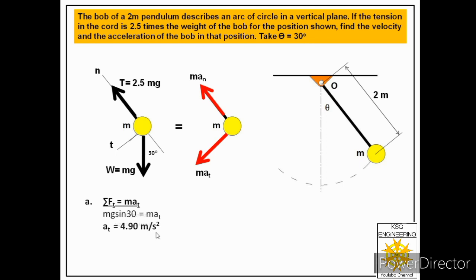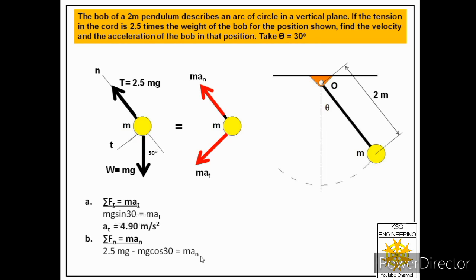Now applying the second equation: summation Fn equals m·an. Two forces act along the normal — the tension T equal to 2.5 mg, and the component of weight mg·cos30°. Taking the direction towards the center as positive, the equation becomes 2.5 mg minus mg·cos30° equals m·an. Mass m cancels, giving normal acceleration an equals 16.03 m/s².